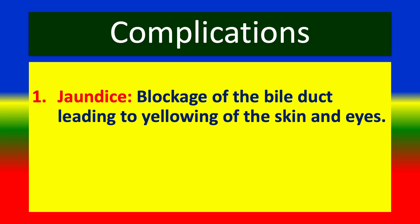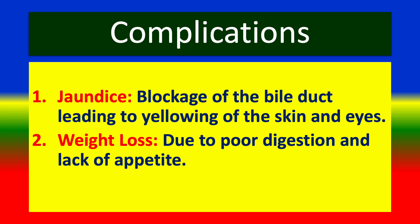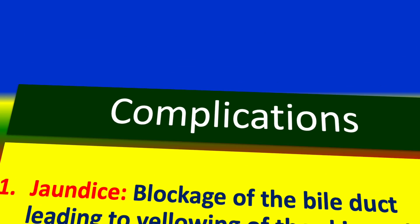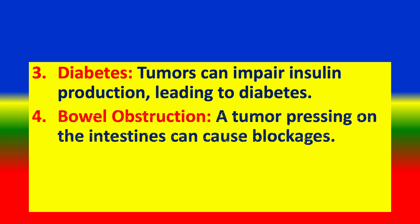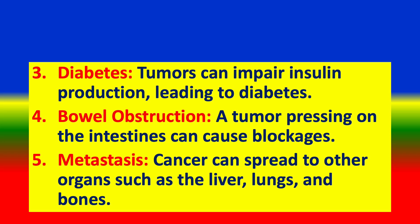Complications of pancreatic cancer include: jaundice, caused by blockage of the bile duct leading to yellowing of the skin and eyes; weight loss due to poor digestion and lack of appetite; diabetes, as tumors can impair insulin production; bowel obstruction when a tumor presses on the intestines; and metastasis, where cancer can spread to other organs such as the liver, lungs, and bones.